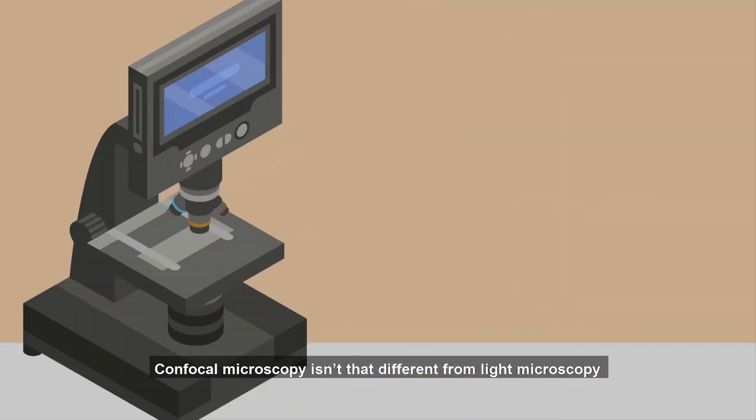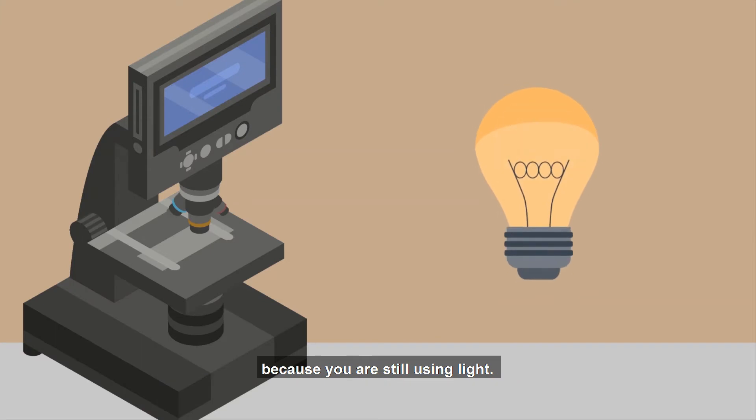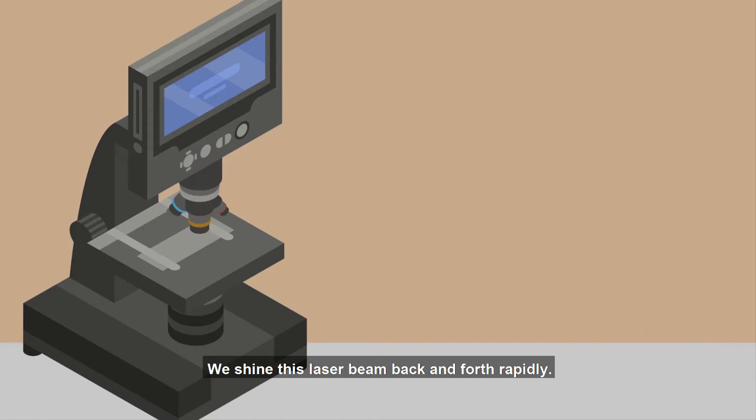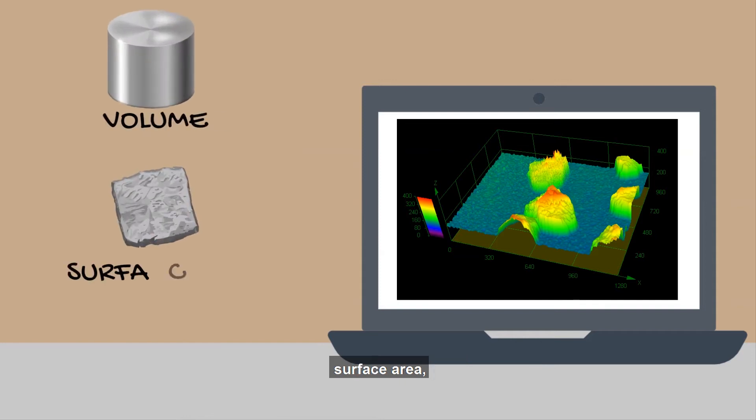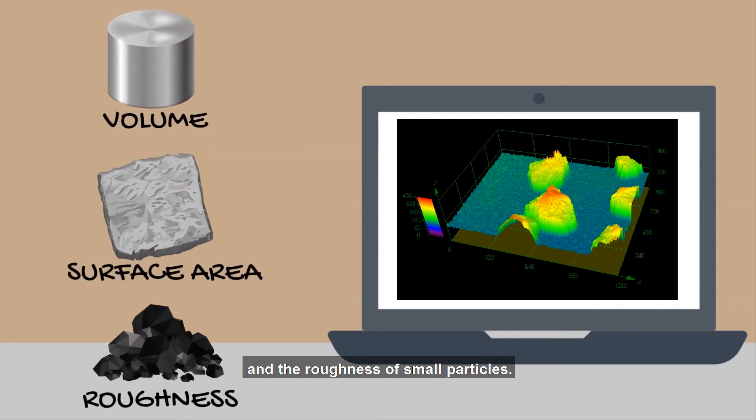Confocal microscopy isn't that different from light microscopy, because we are still using light, just in the form of a laser. We shine this laser beam back and forth rapidly. This scans the sample to create a 3D image to measure volume, surface area, and the roughness of small particles.